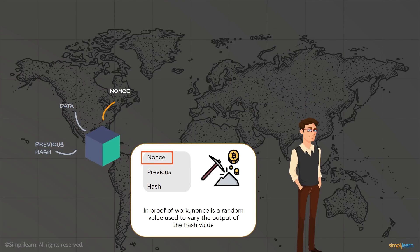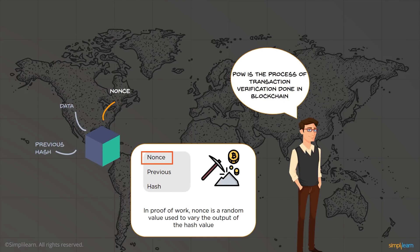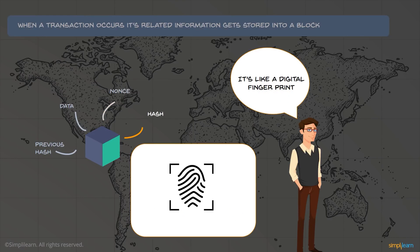Nonce: Bitcoin uses a proof of work algorithm, and in order to execute the algorithm, a nonce is a random value used to vary the output of the hash value. Proof of work is the process of transaction verification done in blockchain.